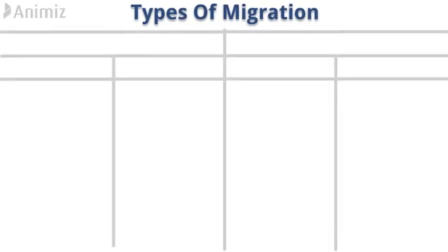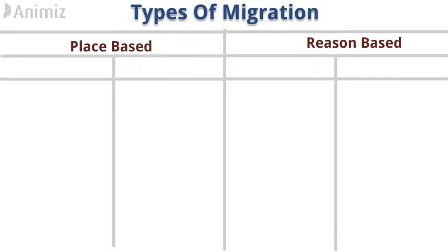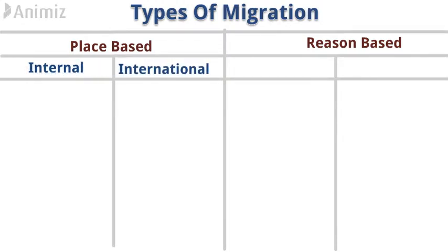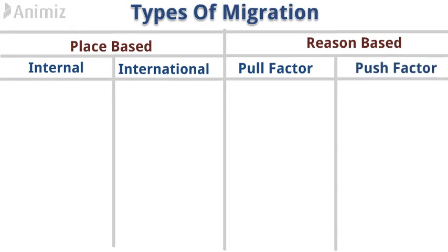Let's move towards the types of migration. Types of migration have been divided into two broad categories: first, place-based migration, and second, reason-based migration. Place-based migration is further divided into internal migration and international migration. Reason-based migration is further divided into migration due to pull factor and migration due to push factor.